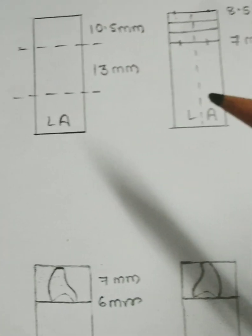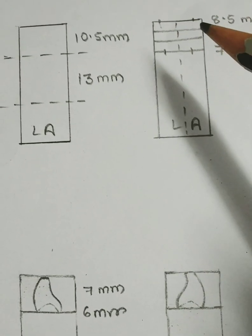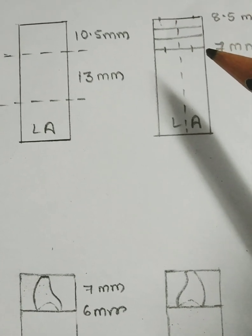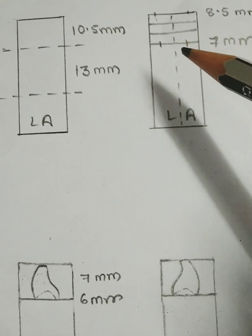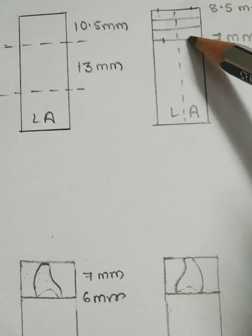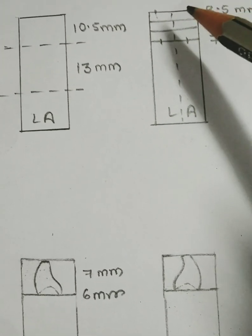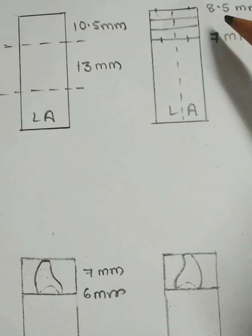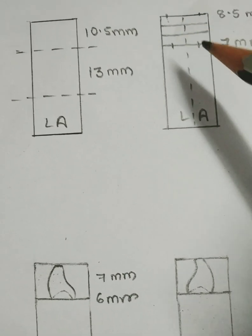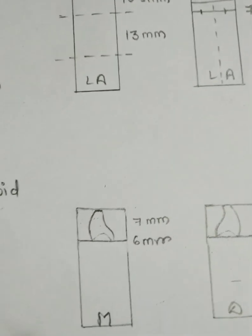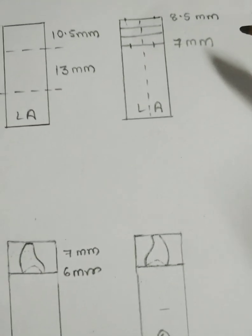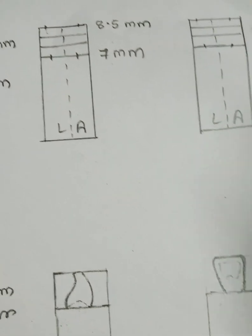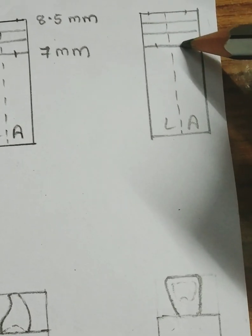Now divide the crown into 3 thirds: incisal, middle and cervical thirds. At the cervix, take 3.5 mm from the midline on both sides — that is 7 mm — and 8.5 mm at the incisal edge. That will give us the mesiodistal width of the crown of the maxillary central incisor.